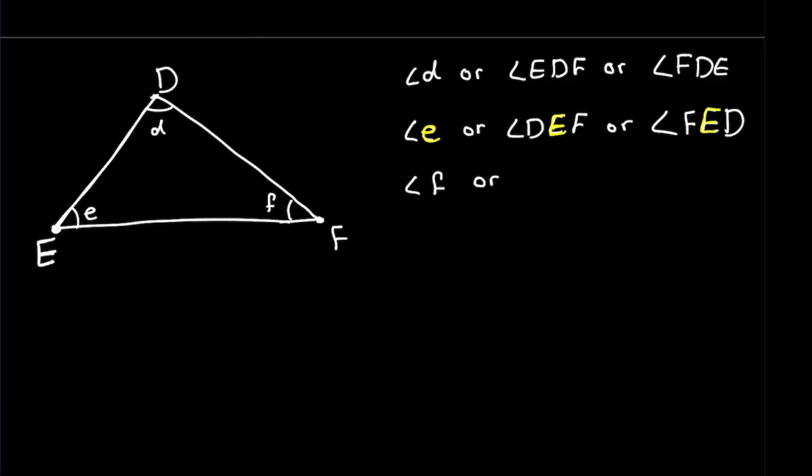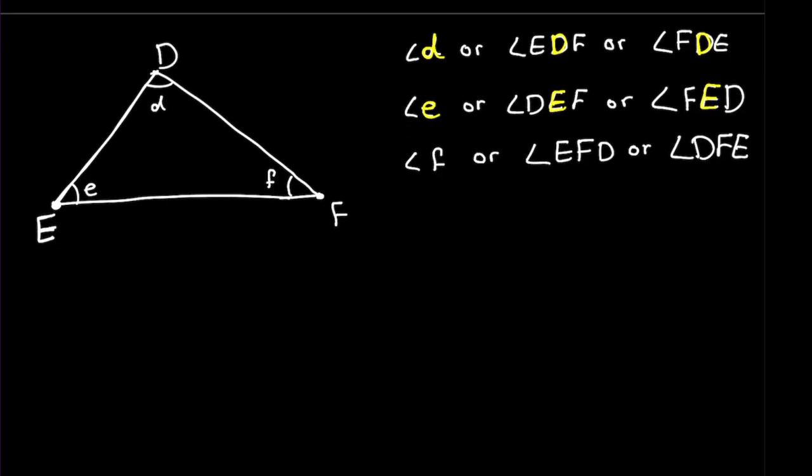You see D? D came in the middle. So now we're going to name angle F, which will be EFD or we can also call it DFE. So that's how we name the angles. These are the two examples I wanted to share in the beginning for the lesson. Now I'm going to do some practice questions for you.